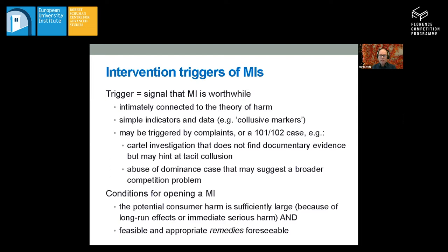That's a quick view on the types of theories of harm which could be dealt with under the NCT. The question is when to start a market investigation. We believe you can't just randomly start investigations — that doesn't seem effective. Rather, we need possibly simple indicators to find out about possible competition problems, and those are intimately connected to the theory of harm. For example, if there is a concern about tacit collusion, then we look for collusive markers. There are also parameters which in general raise suspicion, such as prolonged periods of very high profits in an industry. The question then is whether those are rents from innovation in a very innovative industry, or whether it's an industry with little innovation and barriers to entry leading to such high profits.